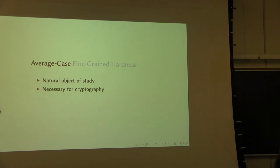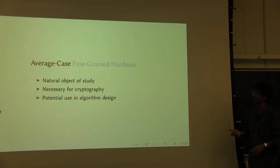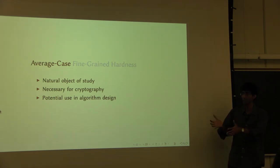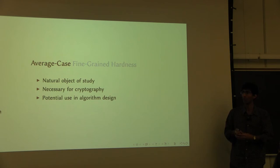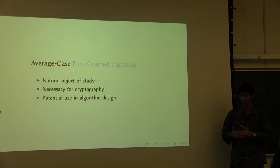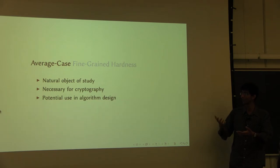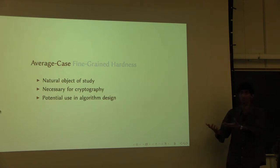Another reason — which I will be in a better position to explain later in the talk — is that it could possibly be used in actually designing algorithms. I know at least one very nice example where it is easier to design algorithms for a certain problem in the average case, and then you can do something else to translate it to the worst case. You can do what is called a worst-case to average-case reduction, where you say: I will take problem A and problem B, and I will reduce solving problem A in the worst case to solving problem B in the average case over some distribution of instances.